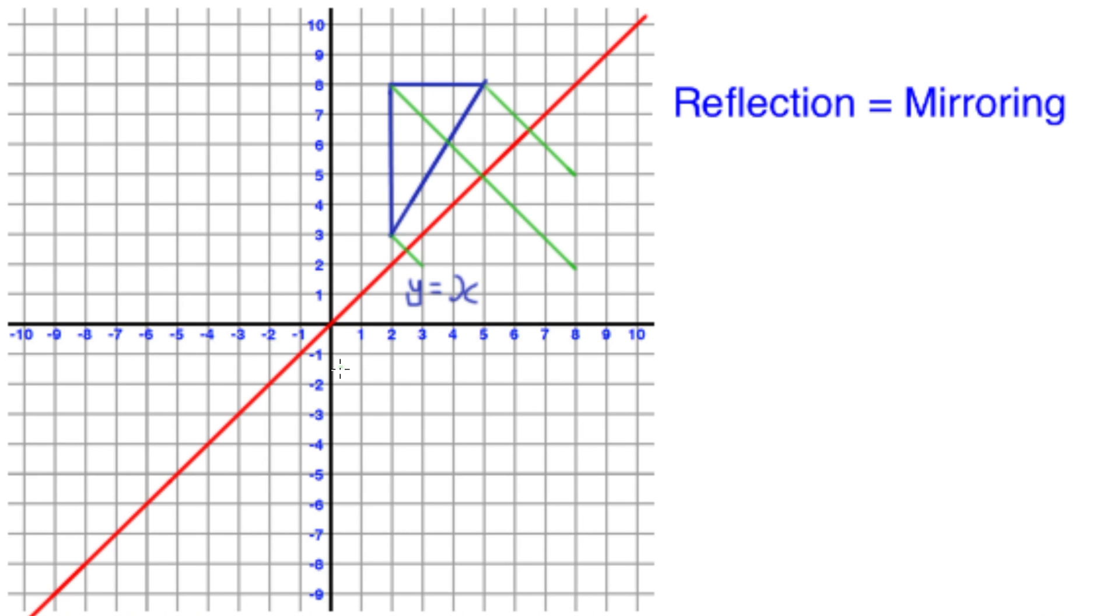In this example we're using the squares to count. However, if you're not given squares in your exam, then be very careful to measure accurately using your ruler. Now we have all our points matched up, let's continue to draw out our new shape.